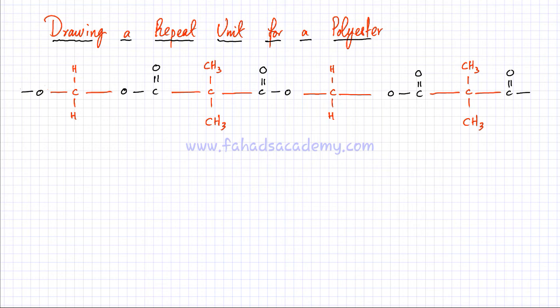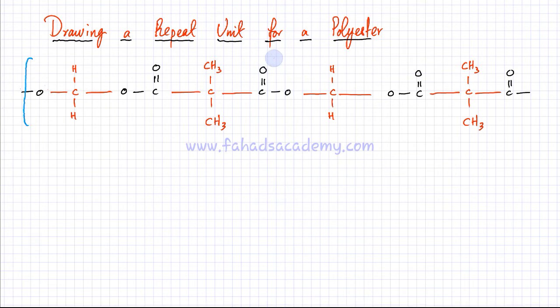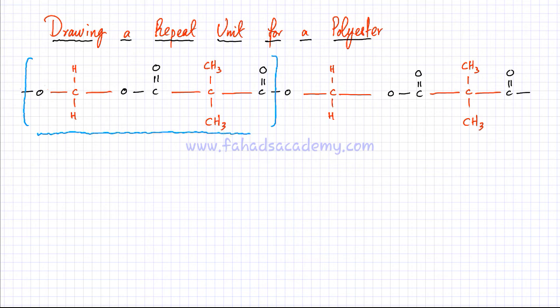A repeat unit is a part of the polymer chain that is constantly repeating again and again. If you look carefully, starting from this end — you have an oxygen here — and looking at this part of the chain, you would notice that the next part is exactly the same. So this part of the chain is repeating, the exact same thing is repeating again.